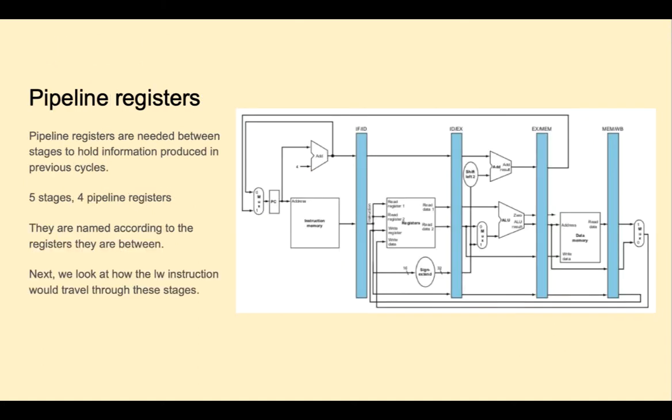Our register file can be supporting two different instructions because we can read from and write to the register file in the same clock cycle. We're going to need to carry information forward for an instruction from stage to stage, and that's the purpose of these pipeline registers, shown here conceptually in blue. For the five stages, we have four pipeline registers separating the stages. They're named according to the stages that they separate. For example, the first one is IF/ID, separates the instruction fetch and the instruction decode stages.